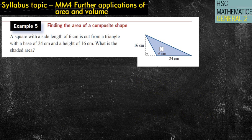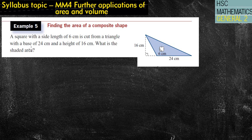Okay, that was the first one. Second one, a square with a side length of 6 centimeters is cut from a triangle with a base of 24 centimeters and a height of 16. What is the shaded area? Okay, so we've got two shapes here. The first shape, we've got, we could call the big triangle here. The triangle in the blue, call it 1. And that other shape is our second shape.